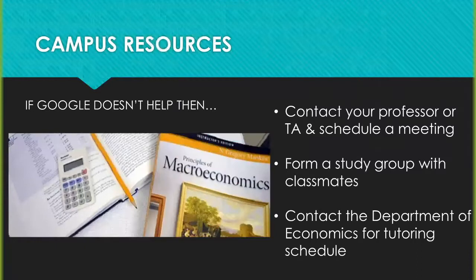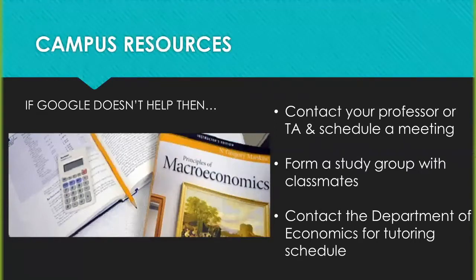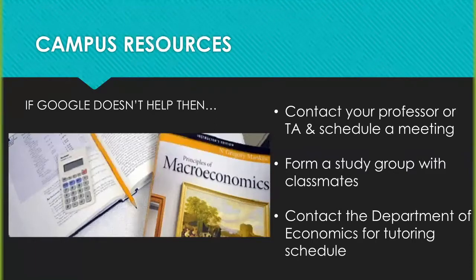We've identified some campus resources. First, if Google doesn't help — which is always the first option — one of the best things to do is contact your professor or TA to schedule a meeting. Your professors and TAs are there to help you outside of class times. They have office hours for a reason, and the general feedback from most faculty is that they wish students would utilize those office hours more. Going to office hours gets your questions answered, ensures you understand the material, and gives you a chance to connect with your professor. Use those office hours and contact your TA — that's the first step.